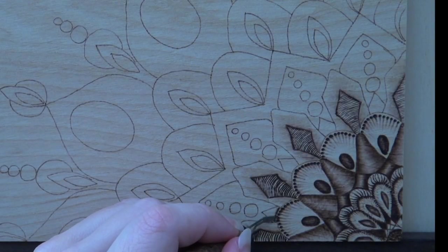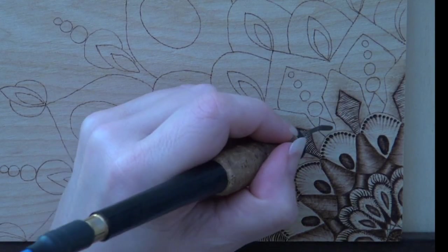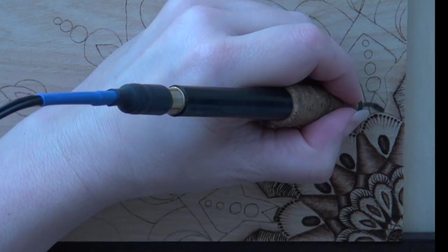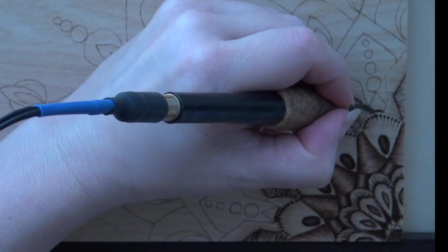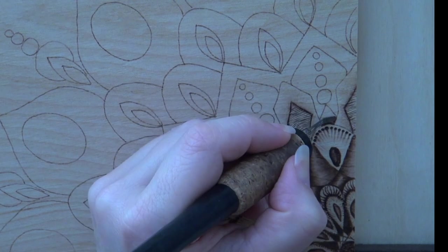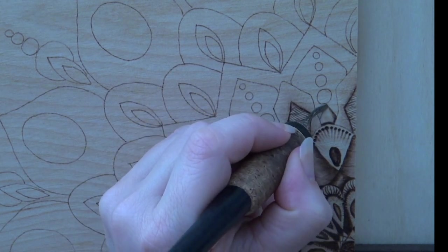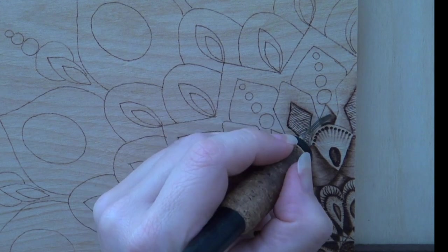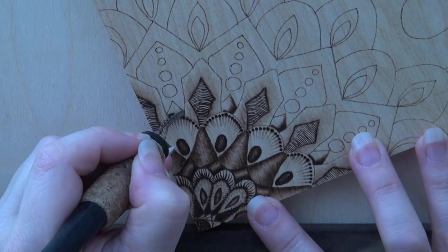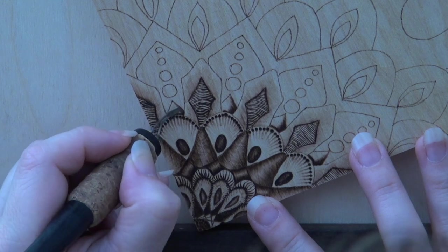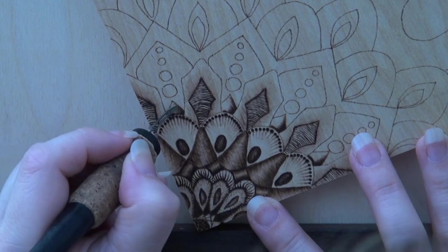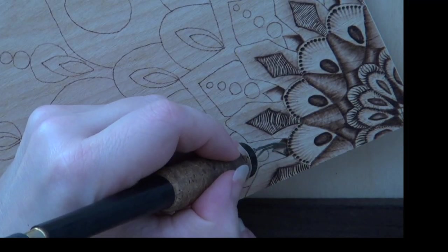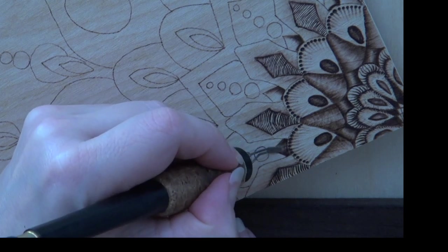Burn a dark thick line along the bottom of each triangle. Then use pull-away strokes to darkly burn along the right edge of each triangle. Rotate the wood as needed to keep the pen tip in optimal position as this will keep your edges sharp. Burn pull-away strokes along the left side of each triangle.